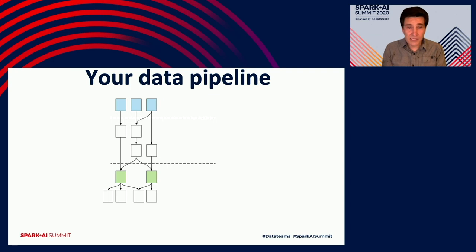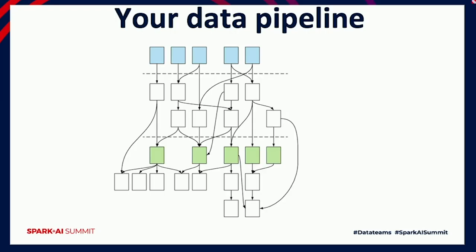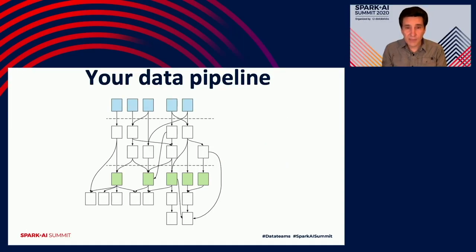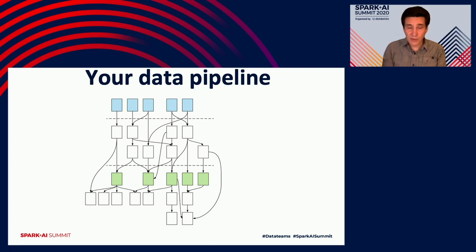Encouraged by your initial success, you get a bit bolder. You notice that the analytical table your pipeline outputs can be very useful for training a model that improves some business process. So you do just that and your pipeline grows in depth. Then another team in your company sees your success, finds their own data sets, and builds a parallel pipeline — now the system grew in both depth and breadth. You discover you can benefit from some of their data and they from yours, so you create links between the pipelines and the two become one.